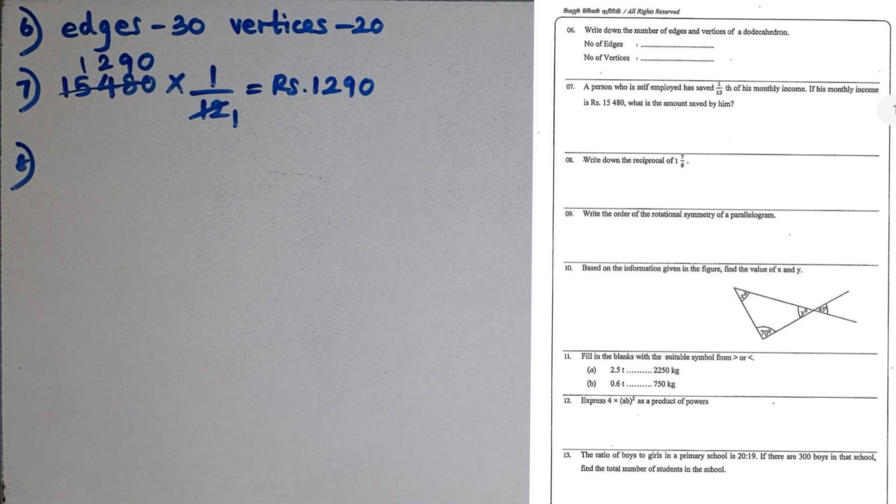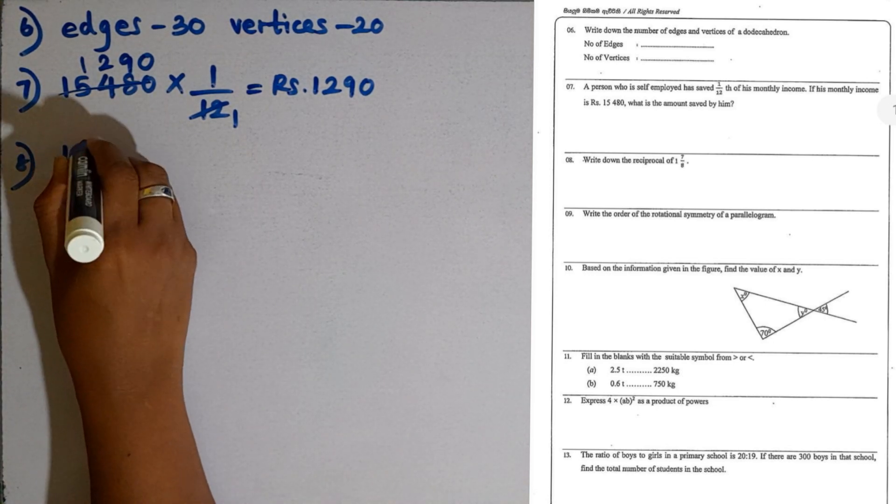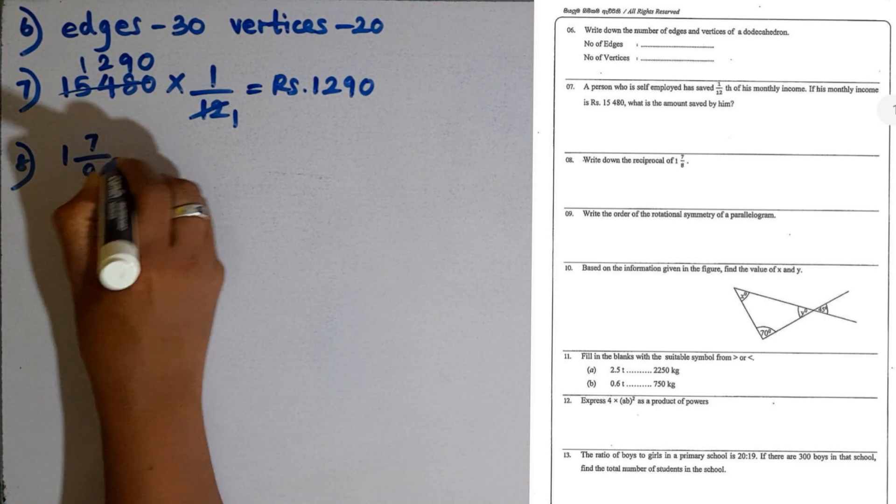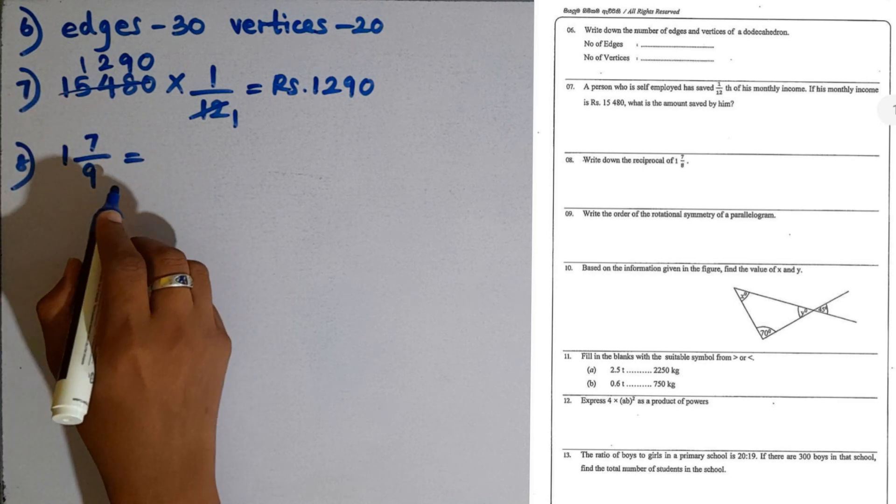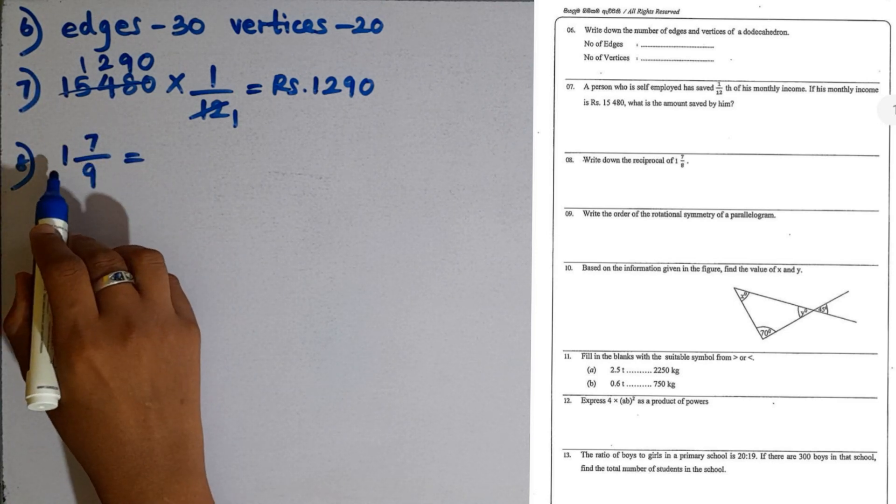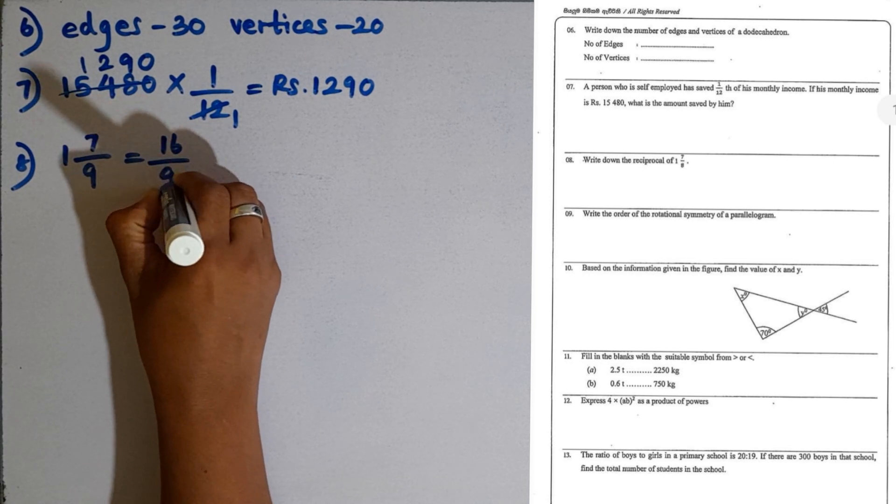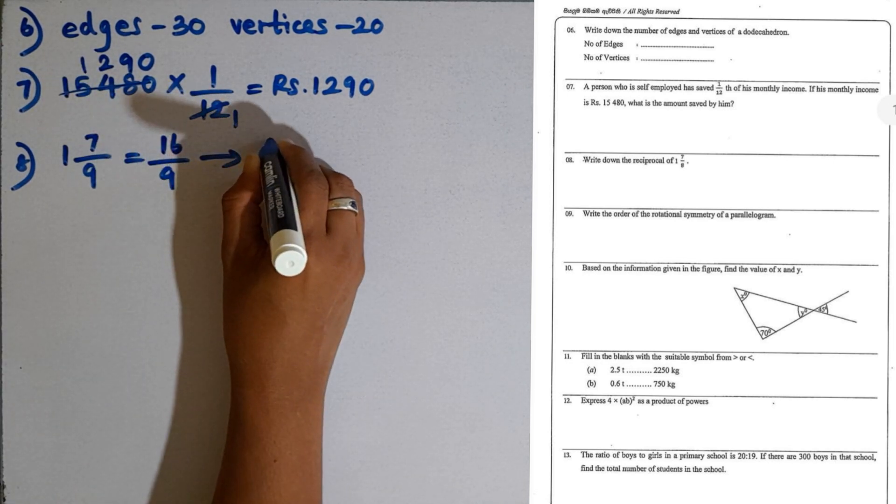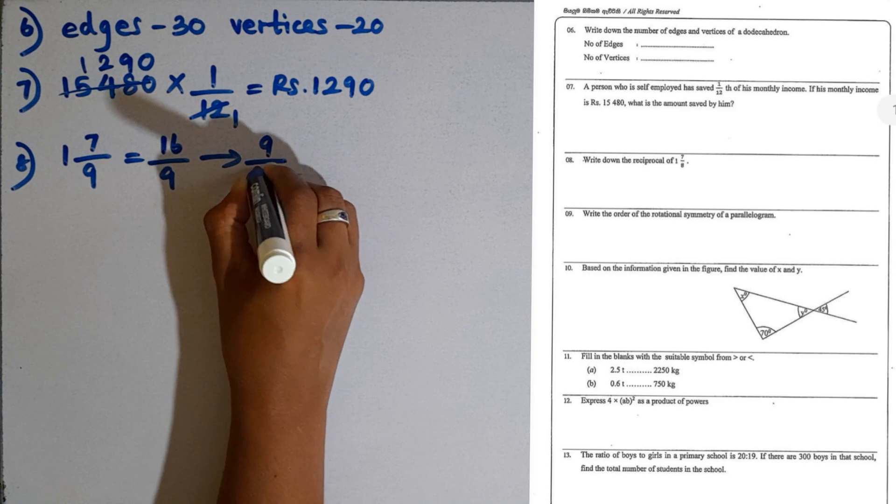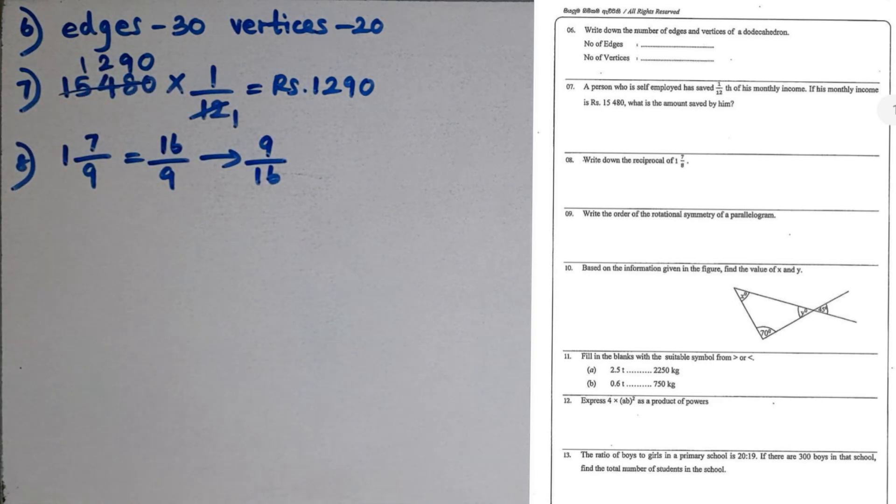Question number 8. Write down the reciprocal of 1 and 7 over 9. Before finding the reciprocal, we have to convert this mixed number into an improper fraction. 9 times 1 is 9, 9 plus 7 is 16. So 16 over 9. The reciprocal is 9 over 16.